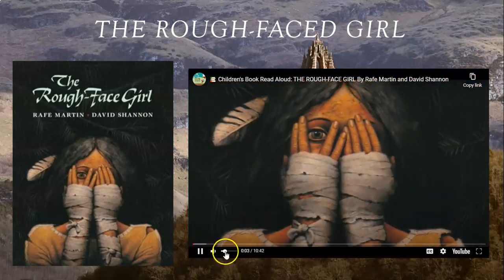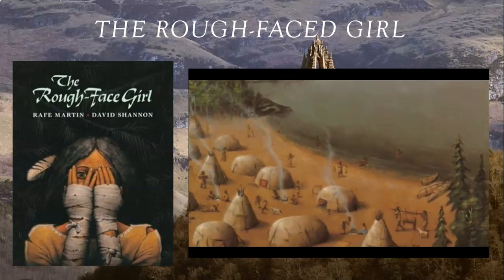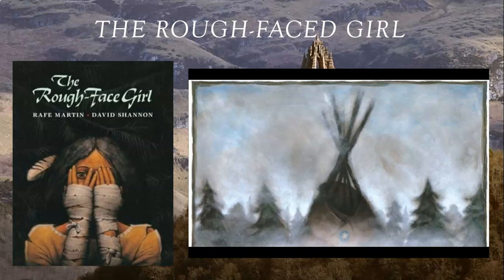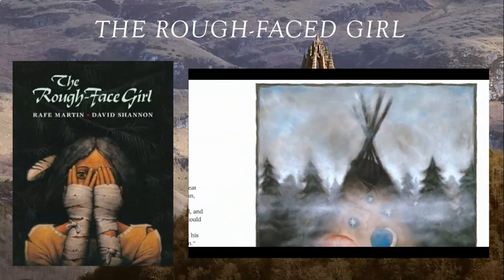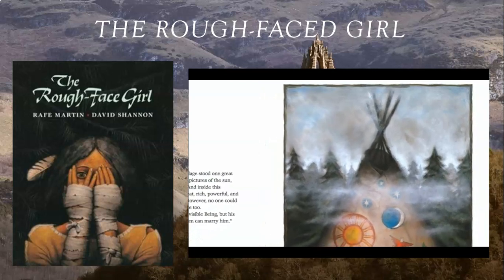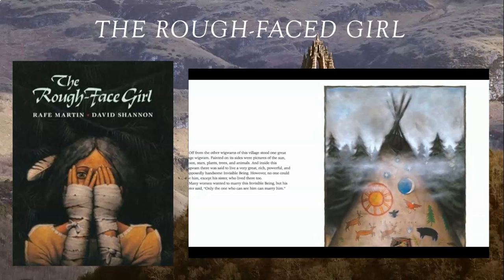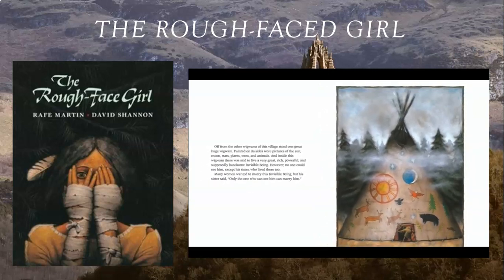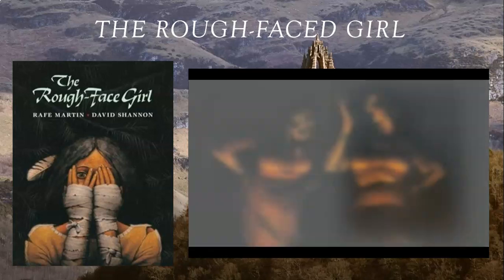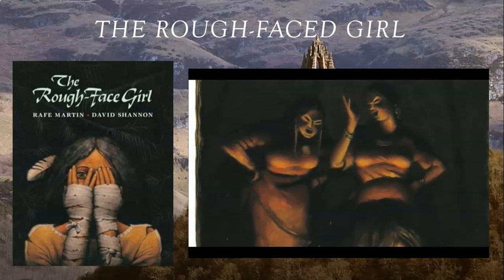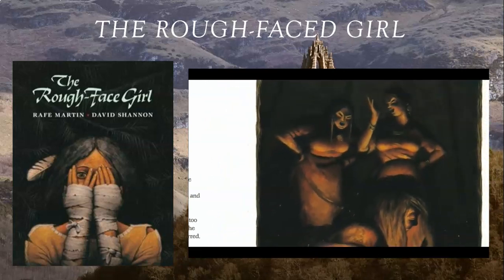The Rough-Faced Girl by Rafe Martin and David Shannon. Once long ago, there was a village by the shores of Lake Ontario. Off from the other wigwams stood one great, huge wigwam, painted on its sides with pictures of the sun, moon, stars, plants, trees, and animals. Inside this wigwam was said to live a very great, rich, powerful, and supposedly handsome invisible being. No one could see him except his sister. In this village lived a poor man who had three daughters. The two older daughters were cruel and hard-hearted, and they made their youngest sister sit by the fire and feed the flames. When the burning branches popped, sparks fell on her.